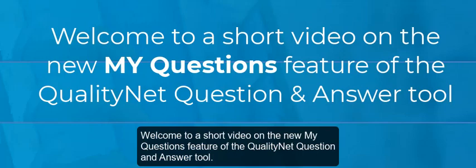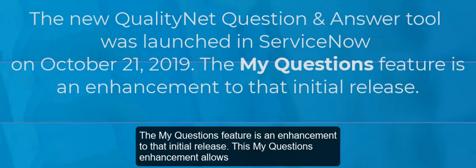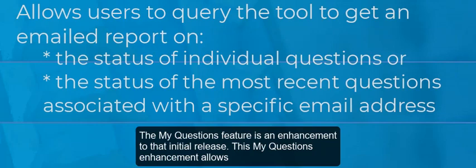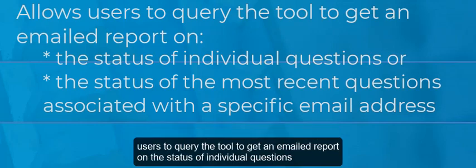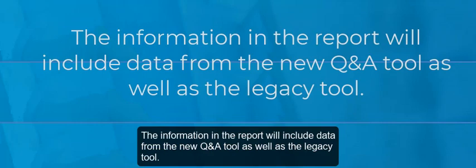Welcome to a short video on the new My Questions feature of the QualityNet Question and Answer tool. The new QualityNet Question and Answer tool was launched in ServiceNow on October 21, 2019. The My Questions feature is an enhancement to that initial release. This enhancement allows users to query the tool to get an emailed report on the status of individual questions or the status of the most recent questions associated with a specific email address. The information in the report will include data from the new Q&A tool as well as the legacy tool.